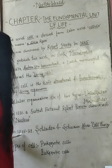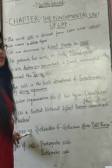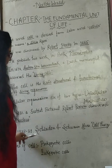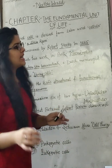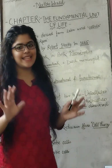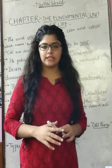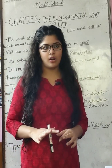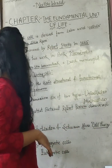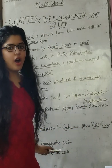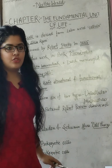In 1838 to 1839, Schleiden and Schwann gave the cell theory. Schleiden was a botanist and Schwann was a zoologist.